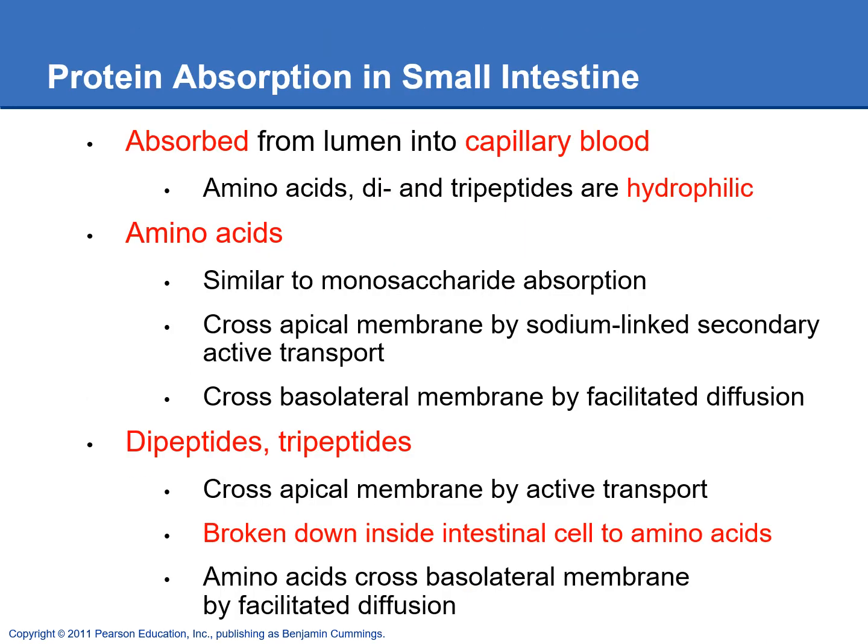Absorption of proteins also happens in the small intestine. We're going to absorb amino acids and also some di- and tripeptides, which are all hydrophilic. Because they're hydrophilic, we use transport proteins similar to glucose — secondary active transport on the apical membrane and facilitated diffusion on the basolateral membrane.